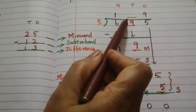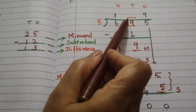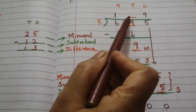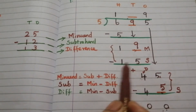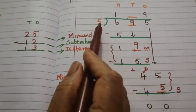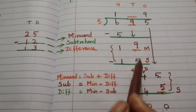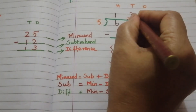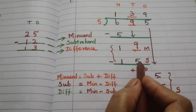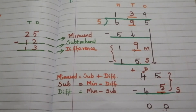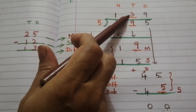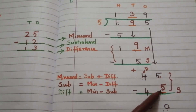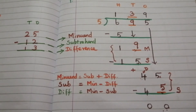Next we have to find this dash, which is in the quotient part. To find this, we consider this 15. 5 threes are 15, so the quotient digit here is 5. Now we have found all three digits: 3, 9, and 5. This is our answer.